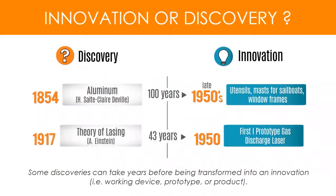You have to understand the difference between what constitutes an invention and what constitutes a discovery. For example, the element aluminum was discovered in 1854 — it's part of the periodic table, a naturally occurring element that somebody found. That was a discovery. It was almost a hundred years later when people actually realized how to use aluminum to make useful things — window frames, utensils, sail masts. It has a huge amount of applications.